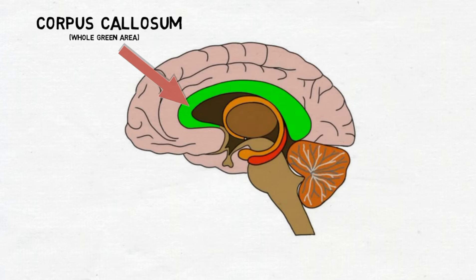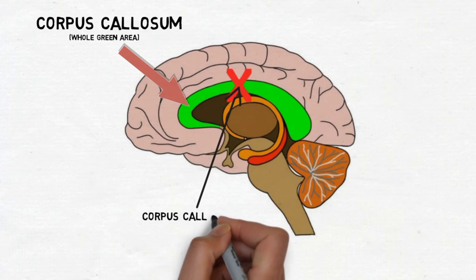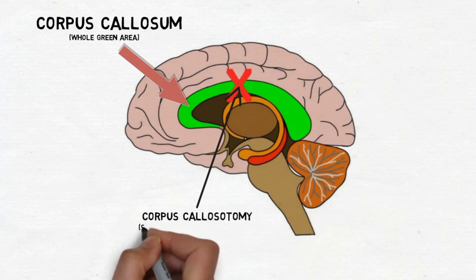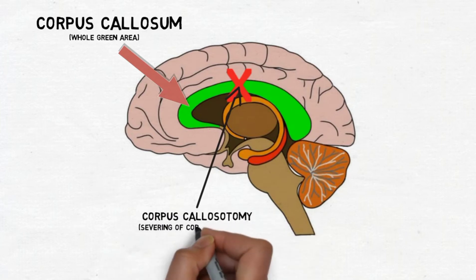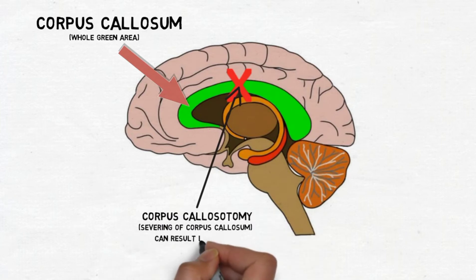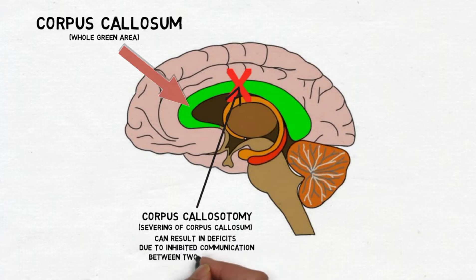The importance of the corpus callosum can be seen in patients who have had their corpus callosum surgically severed, usually to stop the spread of epileptic seizures. After the procedure, known as a corpus callosotomy, patients may display deficits representative of decreased communication between the cerebral hemispheres, such as the inability to name an object if it is shown only in the left visual field.